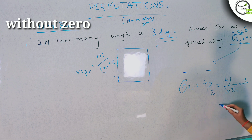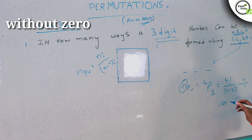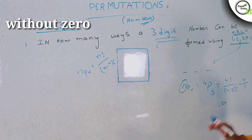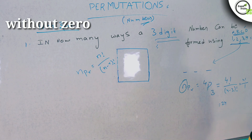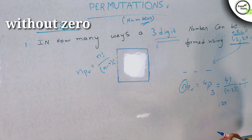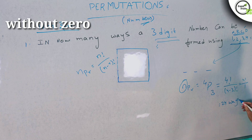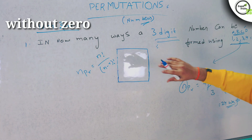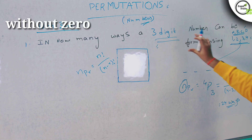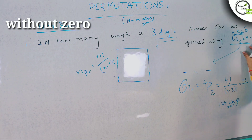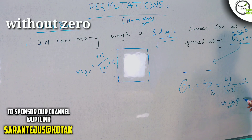So 4 factorial divided by 1 equals 24. Therefore, a 3-digit number can be formed using 1, 2, 3, 4 in 24 ways.